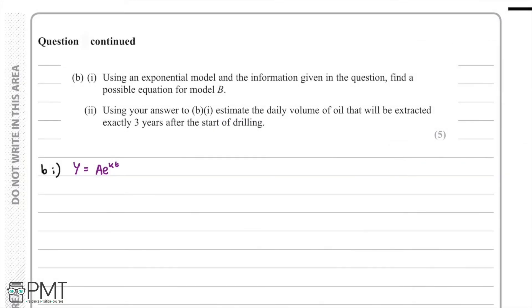For Question B Part 1, we're asked to use an exponential model to find a possible equation for Model B. When we see an exponential model, our standard equation is V equals A times e to the power of KT, where A and K are constants. We need to work out the values of A and K using the information given in the question.